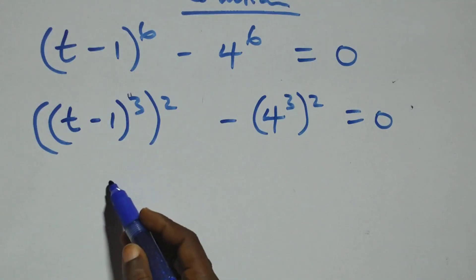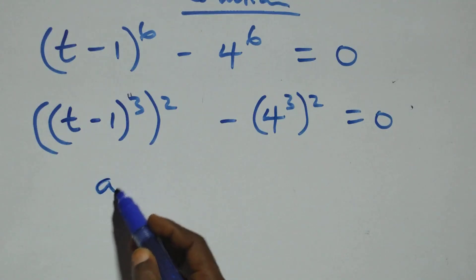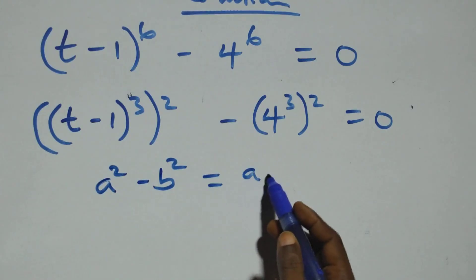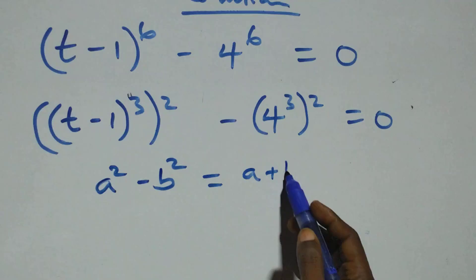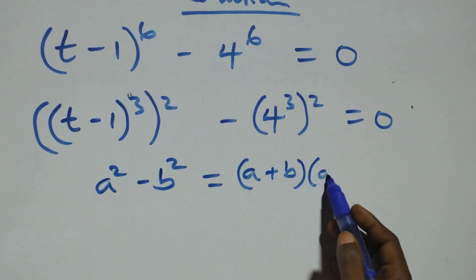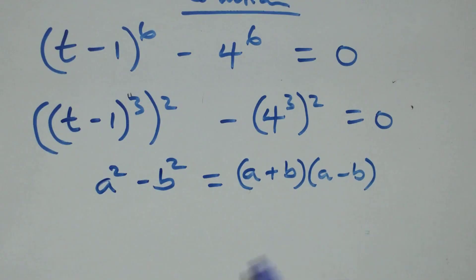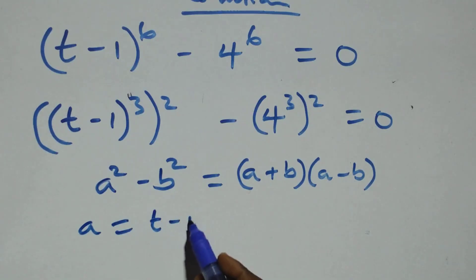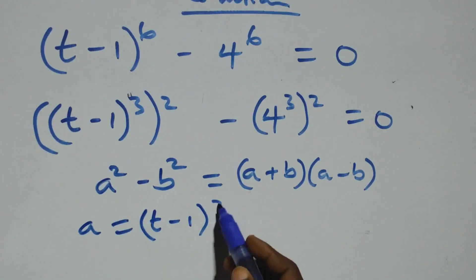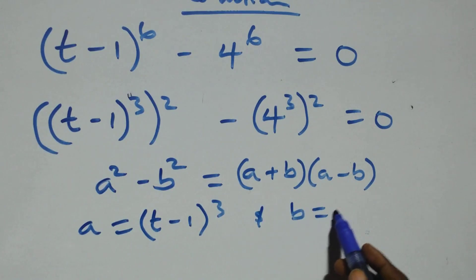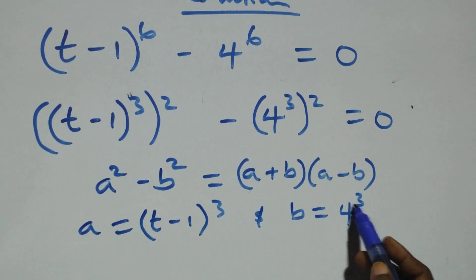This follows when we have a squared minus b squared, which can be written as (a + b)(a − b), where a stands as (t − 1) raised to the power 3, and b stands as 4 raised to the power 3.